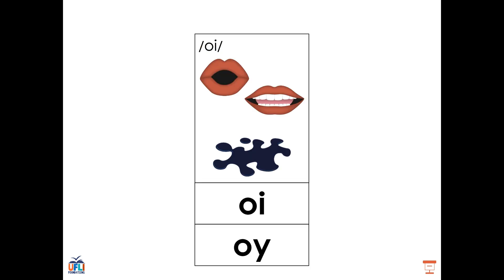The OI sound can be spelled with either OI or OY. OI is going to come at the beginning or the middle of a word, whereas OY is going to come more typically at the end.